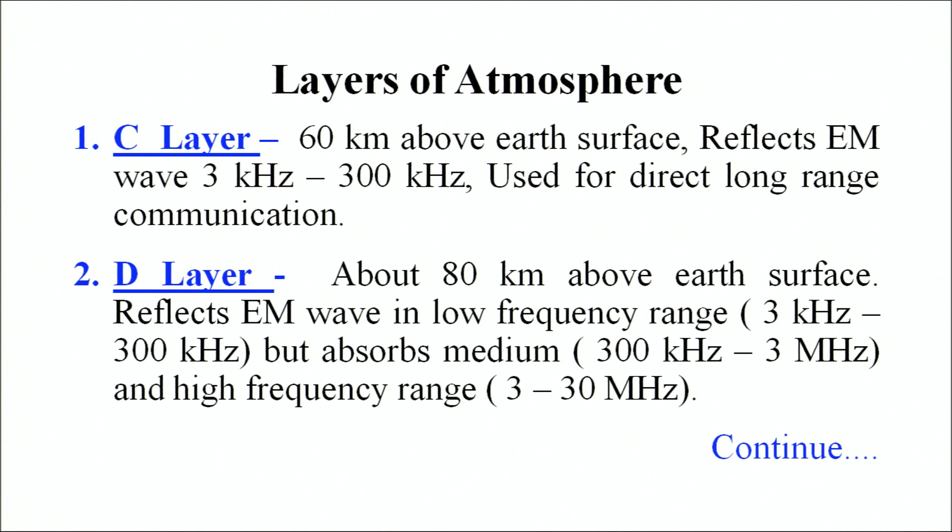The C layer is used for direct long range communication. Another layer used for communication is the D layer, which is in the ionosphere at about 80 kilometers above the earth's surface. The D layer reflects electromagnetic waves in the low frequency range of 3 kilohertz to 300 kilohertz, but it absorbs the medium frequency range (300 kilohertz to 3 megahertz) and the high frequency range (3 to 30 megahertz). Other layers used in communication are the E layer, the F1 layer, and the F2 layer.